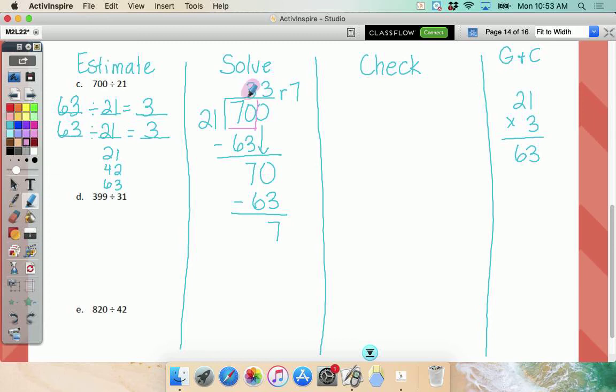So I know that 63 is going to work for 70 because I just did it. So I'm going to use it again. All right. So now, remainder seven. Here's what we're forgetting. We're forgetting that our check with multiplication looks different now.